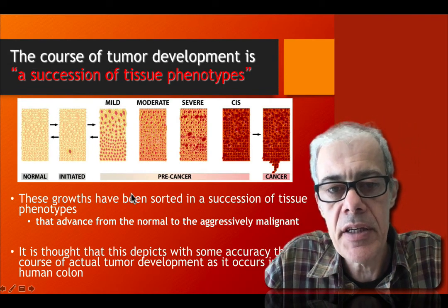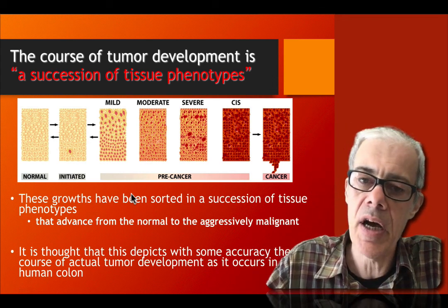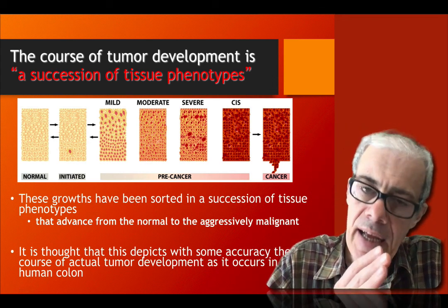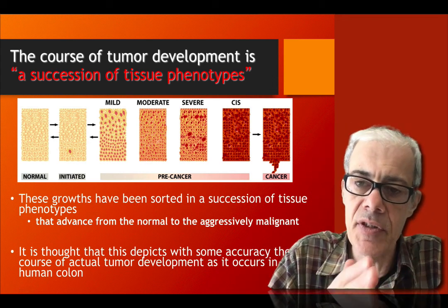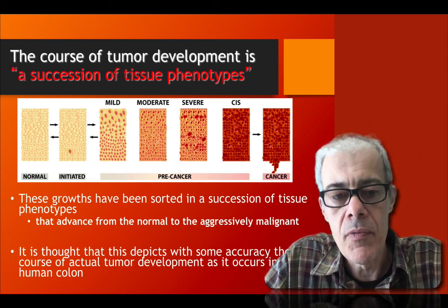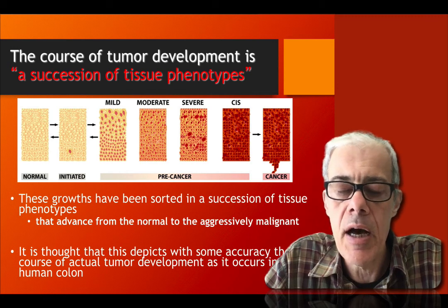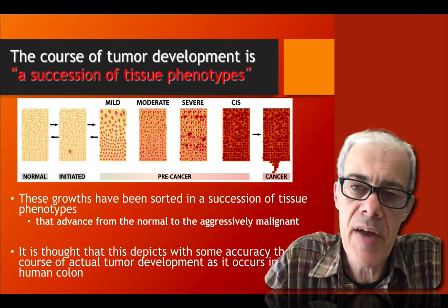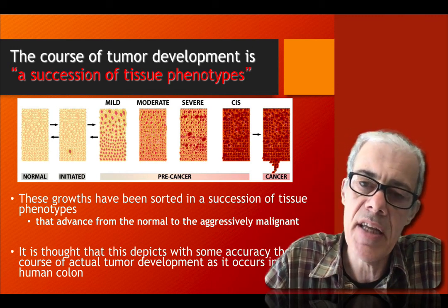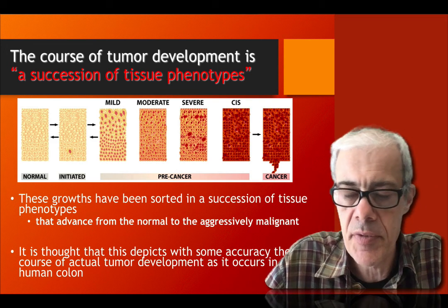These samples were taken from different patients and then organized in levels of severity. In the next couple of slides, we have three pieces of evidence that strongly suggest that it's a succession of phenotypes.